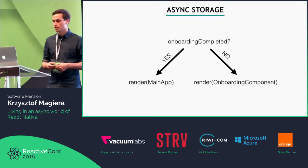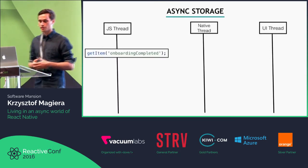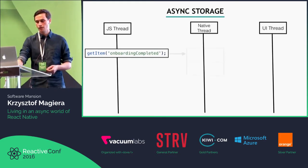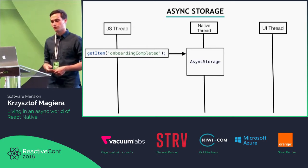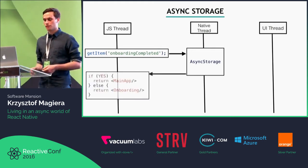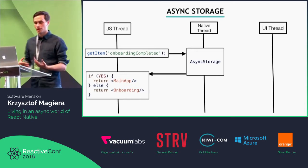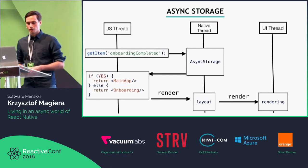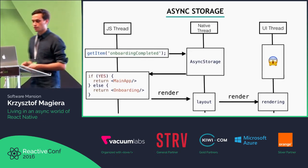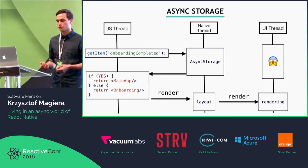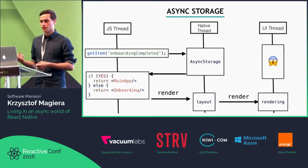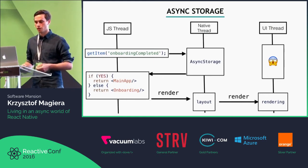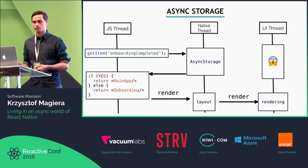There is an alternative API called AsyncStorage. On the JavaScript thread you ask async storage to get an item with a given key. It goes to the native thread, which reaches out to the actual storage, finds the value, and returns it to JavaScript. Depending on the results, we render the main app or the onboarding screen. The issue is that in the meantime there is nothing your app can actually render. It would be much easier to read it synchronously so we can show the results at application start.